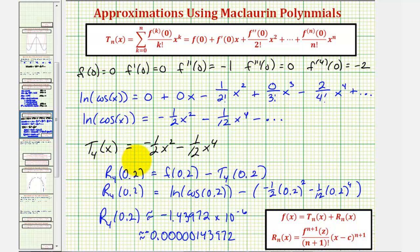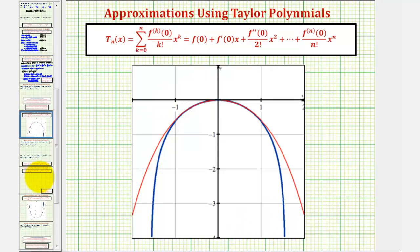The Taylor polynomial approximation is a very good approximation for the exact value of natural log of cosine zero point two. Looking at the graph, the original function is in blue and the Taylor polynomial is in red. Notice how around x equals zero the red function is a very good representation of the original function. I hope you found this helpful.